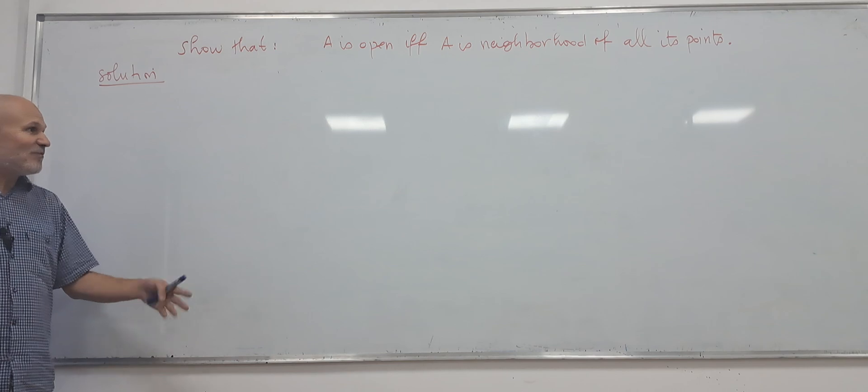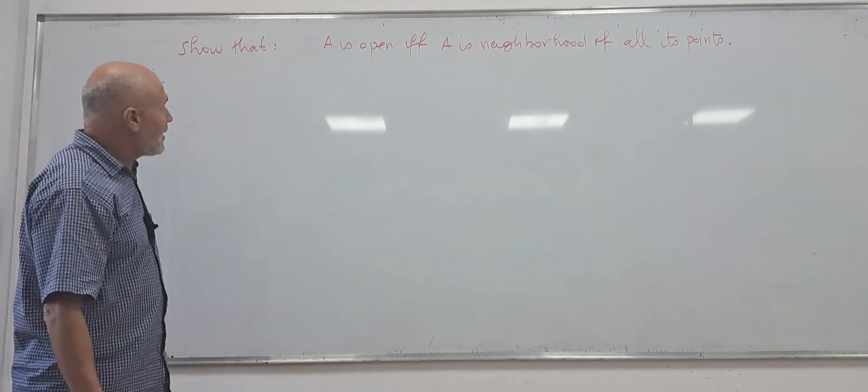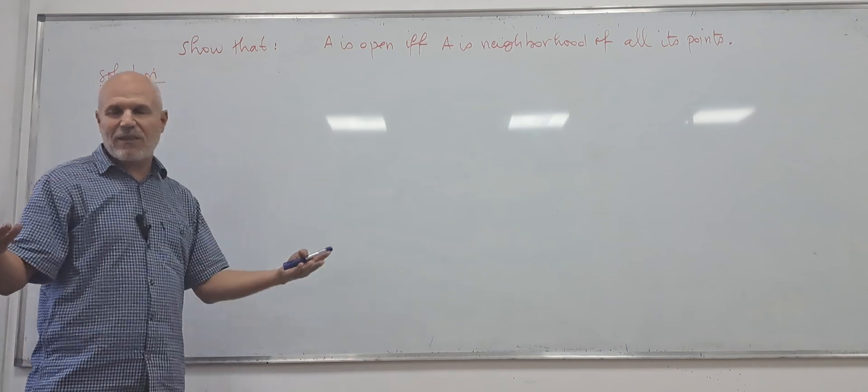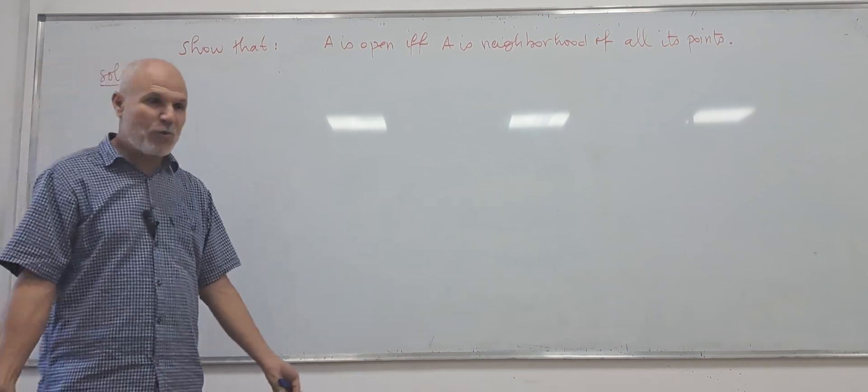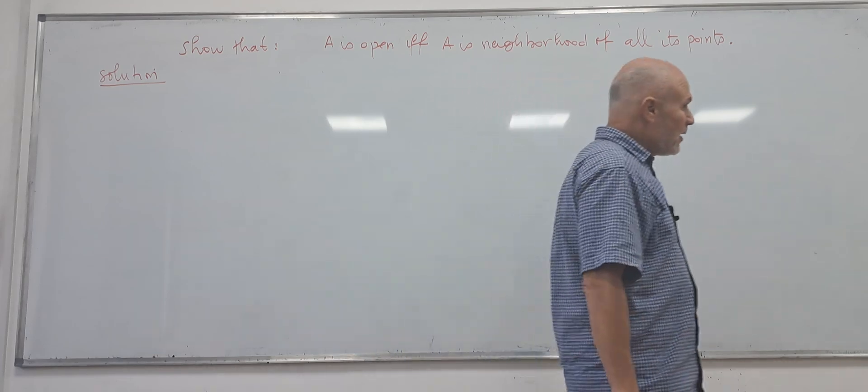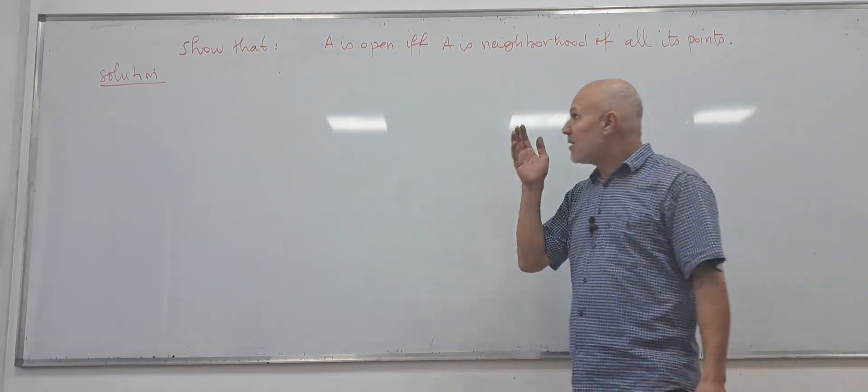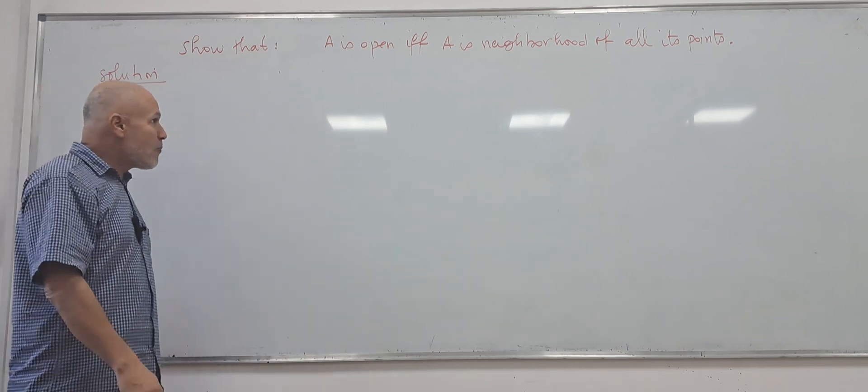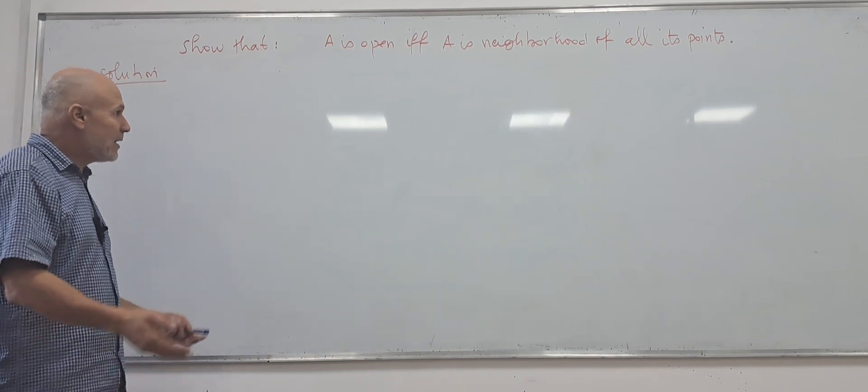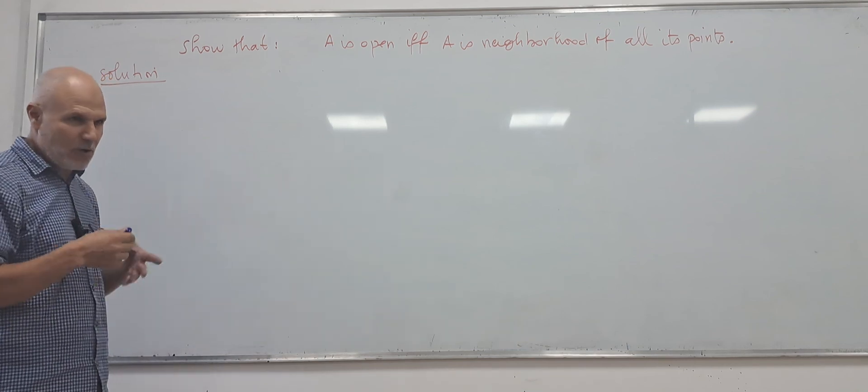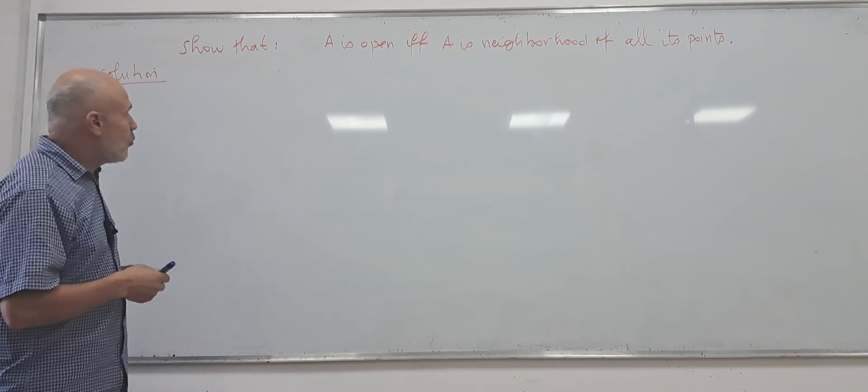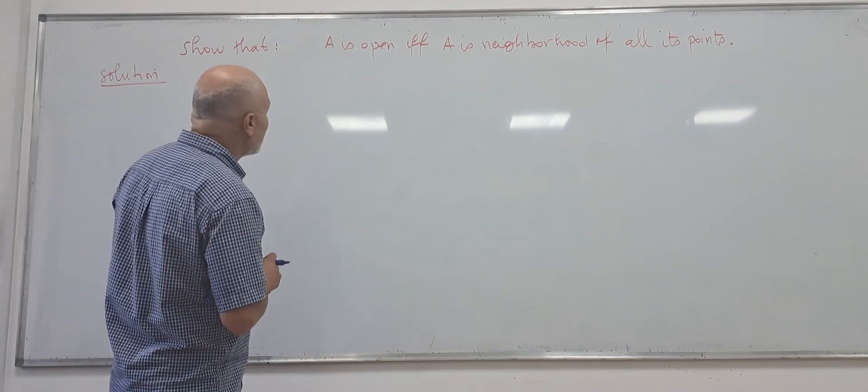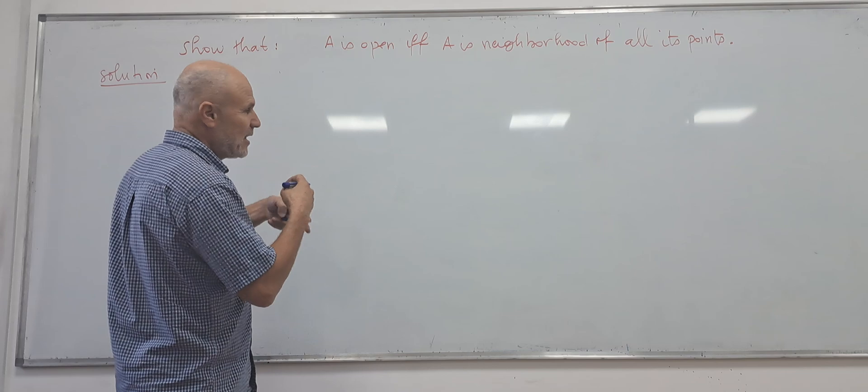This exercise stands up for all topologies, so if we prove it for topology of A, usual topology, this will be true for general topology. Here we have an equivalence between an open set and the set is neighbor of all its points. We can prove it by proving equivalence, so implication in the two senses.